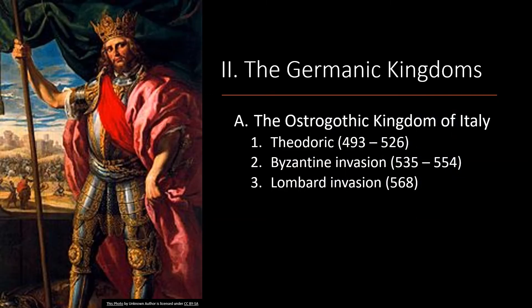The Germanic kingdoms that delivered the death blow: first, the Ostrogothic kingdom of Italy. Zeno, emperor of the Byzantine Empire, had Theodoric act as his deputy to defeat and kill Odoacer, which he did — but Theodoric would not act as Zeno's deputy and instead set up his own rule over Italy. Theodoric tried to integrate Romans and Germans — each people under their own law while the Ostrogoths controlled the army. Resentment came through religion, as the Italians saw the Ostrogoths as heretics for following Arian Christianity.